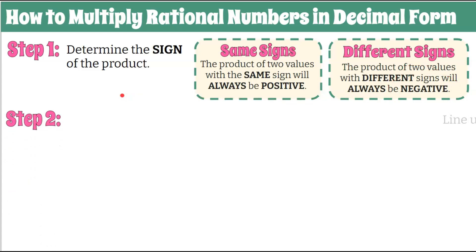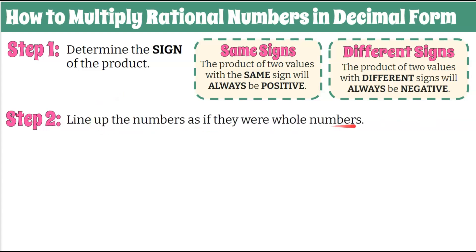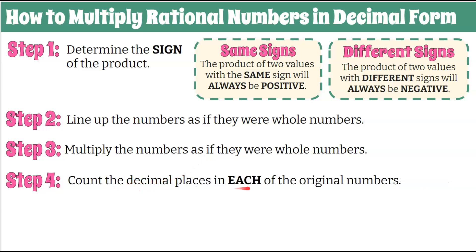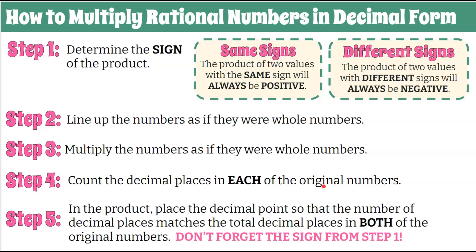Step two: we're going to line up the numbers as if they were whole numbers, lining them up by digits, ignoring the decimal point but keeping it in place. Step three: we're going to multiply the numbers as if they were whole numbers. Step four: we're going to count the decimal places in each of the original numbers. And step five: in the product, we're going to place the decimal point so that the number of decimal places matches the total decimal places in both of the original numbers. And we're not going to forget our sign from step one.